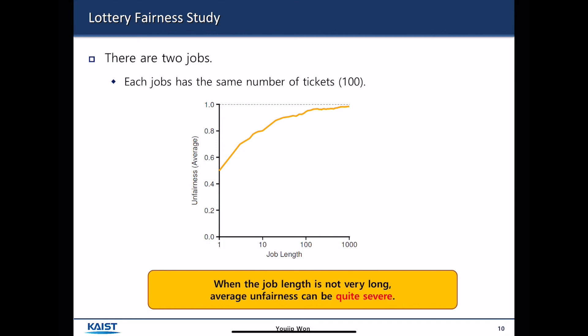Lottery becomes fair when it is executed for a long period of time. So, as you repeat the experiments over and over again, the predefined probability converges to the result of the actual experiments. And each job has the same number of tickets, for example, 100.